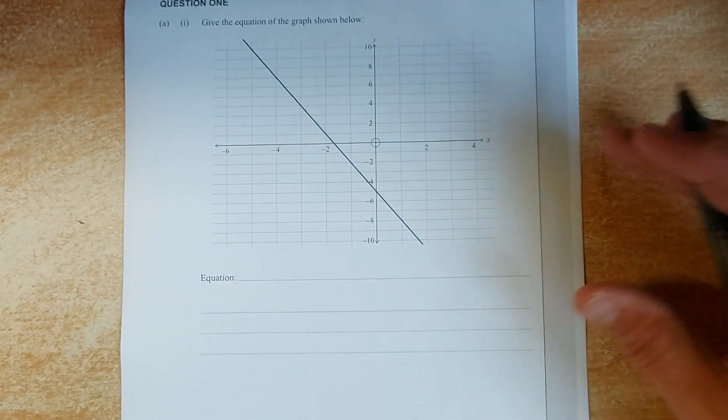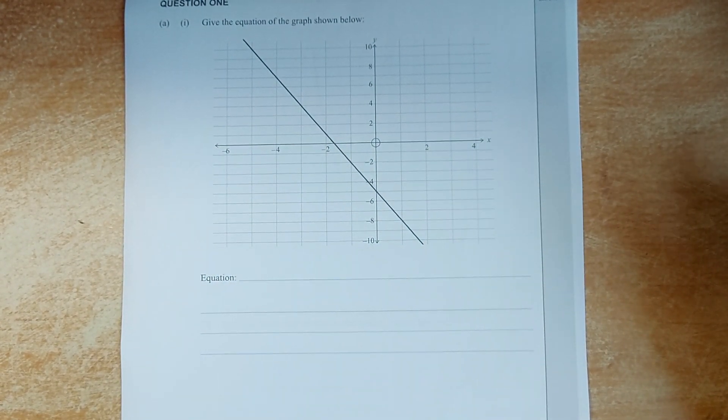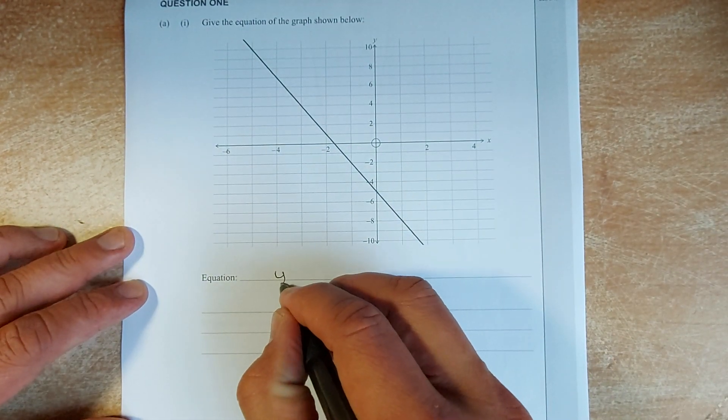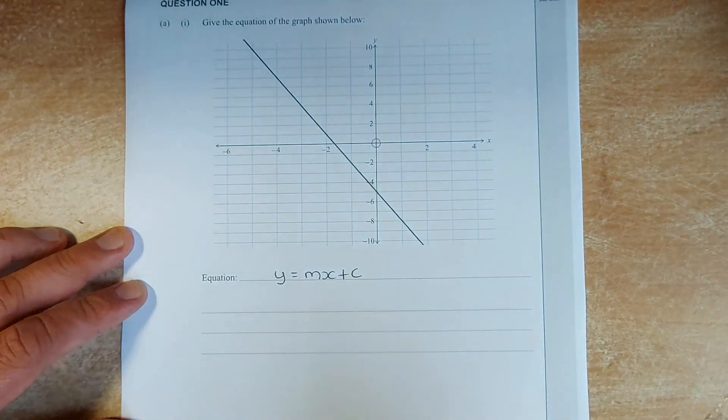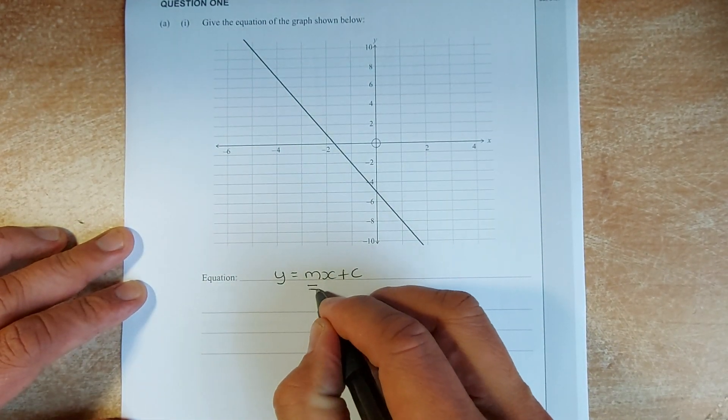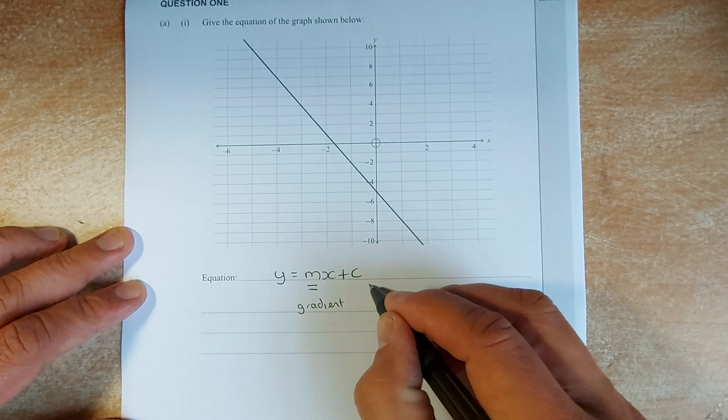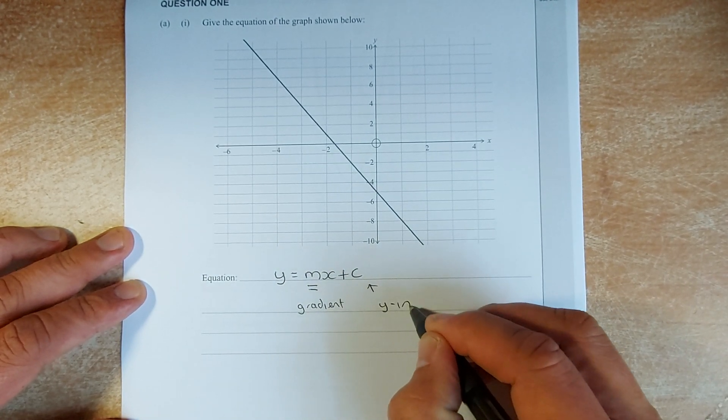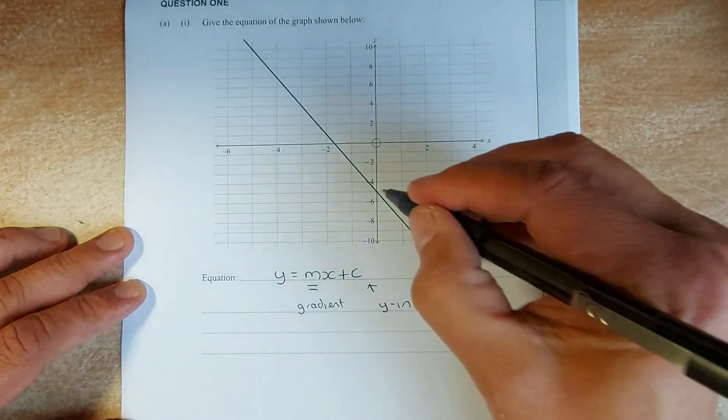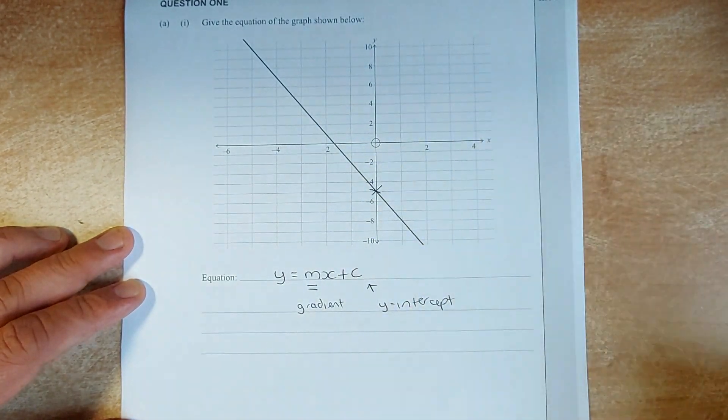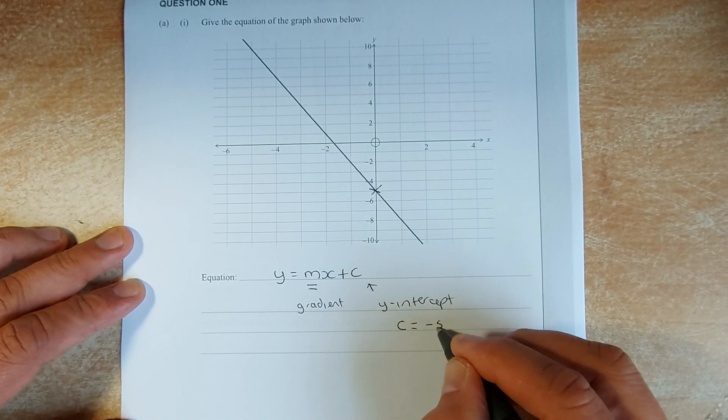Okay, the first question is, find the equation of this straight line graph. Okay, the equation of a straight line graph has this formula, y equals to mx plus c. So your job is to find the value of m, which is the gradient, and c is the y-intercept. Y-intercept means where the line cuts the graph. So very simple, the line cuts at this point here, and it cuts at negative 5, so your c equals to negative 5.